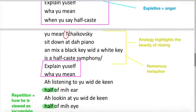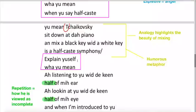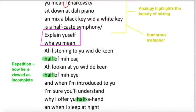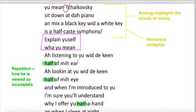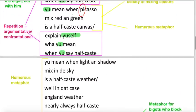You mean Tchaikovsky sit down at the piano and mix a black key with a white key as a Half-Caste symphony. So now he refers to Tchaikovsky and the beautiful music that he makes by mixing a black key with a white key. It's another analogy like the one with Picasso that highlights how beautiful it is to mix. It reinforces this idea that he feels very proud of his mixed heritage and he sees it as a beautiful thing. And of course, it again is a humorous metaphor.